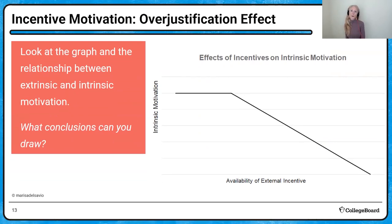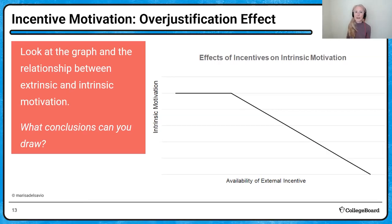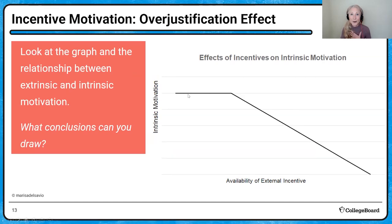We know that people who are intrinsically motivated to do a task can lose that intrinsic motivation simply by being given an extrinsic reward. This graph shows the relationship between extrinsic and intrinsic motivation. Here's intrinsic motivation — let's say you're intrinsically motivated to cook, like I am. I love to bake cookies. But then somebody starts paying you to bake six dozen cookies a week.